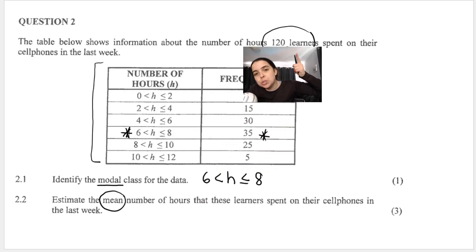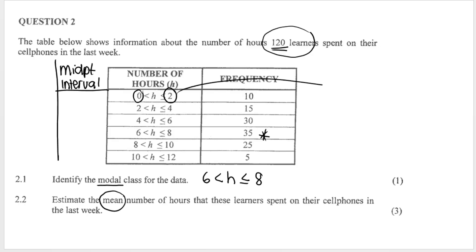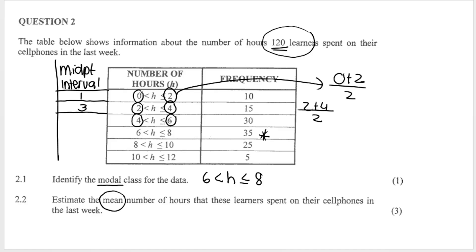I'll extend the table and work out the midpoint of each interval. To find the midpoint, we take the two boundaries of the interval and divide by 2. So for the first interval: (0 + 2) ÷ 2 = 1. For the second: (2 + 4) ÷ 2 = 3. Then (4 + 6) ÷ 2 = 5, and so on. For the interval 10 to 12, the midpoint is obviously 11.